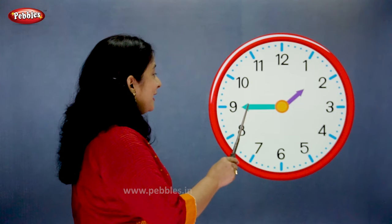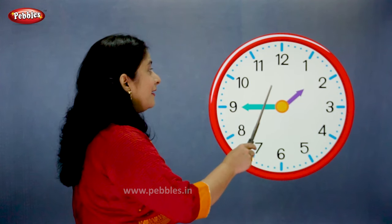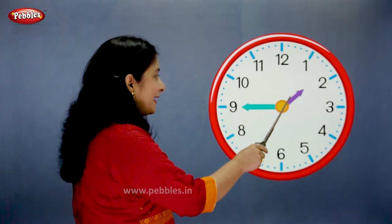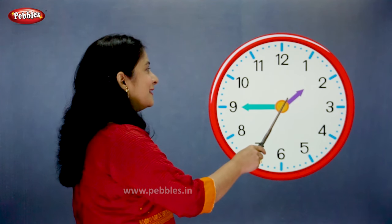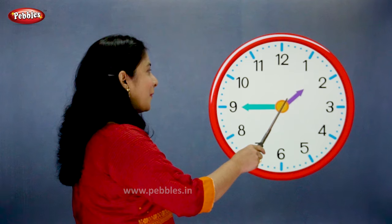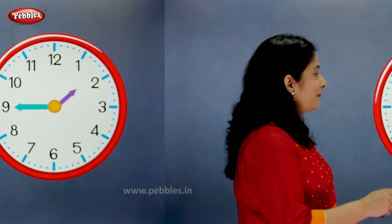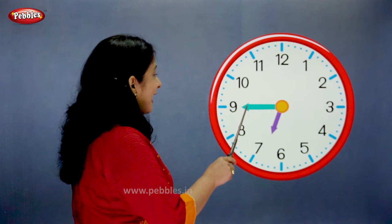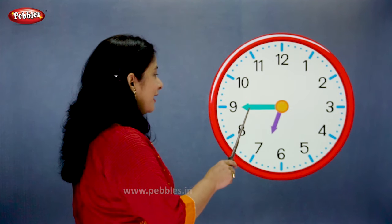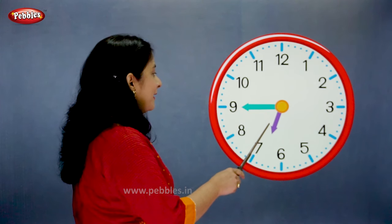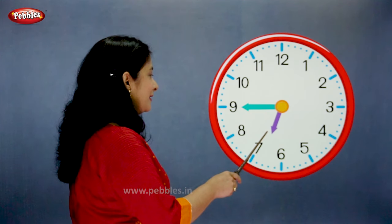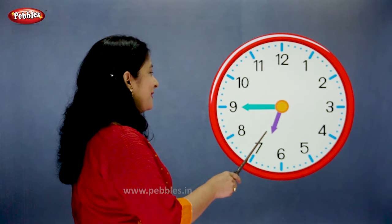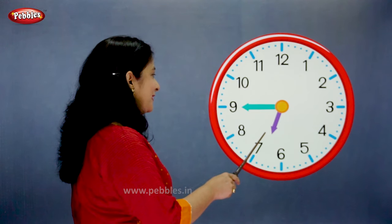The minute hand is on 9. The hour hand is moving towards 7. So we say the time is quarter to 2. The minute hand is on 9. The hour hand is moving towards 7. So we say the time is quarter to 7.